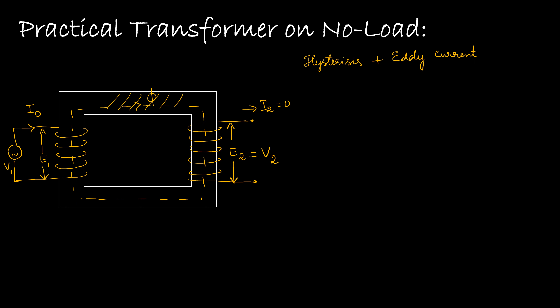The primary winding will have a certain amount of resistance R1, and the secondary will have a certain amount of resistance R2. As we know, copper losses are represented by I²R. On the primary side, we have no load current only, so it will be I0²R1. Because the secondary side is unloaded, the secondary copper losses I2²R2 are zero. This entire primary current I0 must account for both hysteresis and eddy current losses as well as a small amount of copper losses. The primary copper losses I0²R1 are small because under no load conditions, the transformer takes very little current.